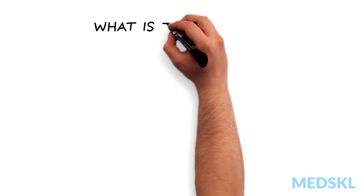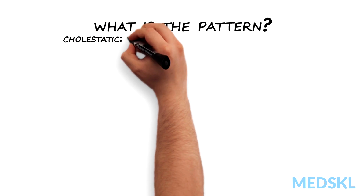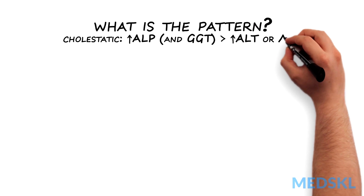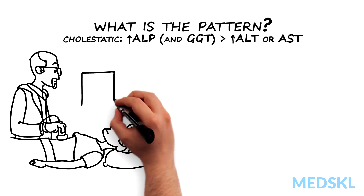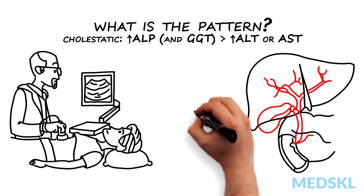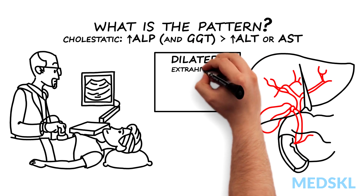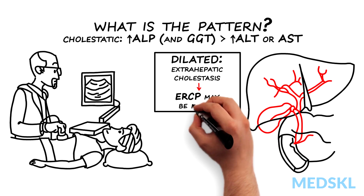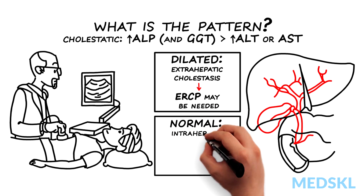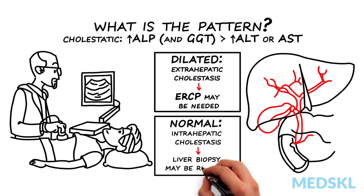Second, what is the pattern? If the pattern of injury is cholestatic — that is, the ALP and GGT rise is greater than the ALT or AST — you will need to obtain a dedicated ultrasound of the liver and biliary tree to look at the bile ducts. Dilated bile ducts indicate extrahepatic cholestasis and an ERCP may be needed for diagnosis and therapy. Normal bile ducts indicate intrahepatic cholestasis and a liver biopsy may be required if the cause is not identified by history or other investigations such as the antimitochondrial antibody or MRCP.